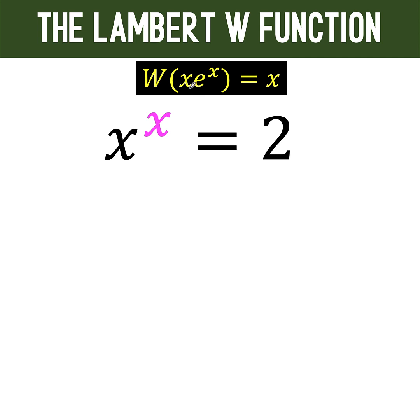So the only missing quantity here in order to apply this Lambert W function is the natural number e. So let's do some algebraic manipulation so that we can transform this left side of the equation into the form x times e raised to x. So first, let's take the natural logarithm of both sides. So we have ln of the left side equals ln of the right side.